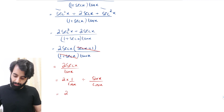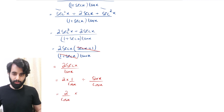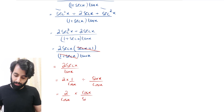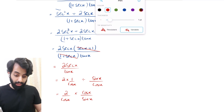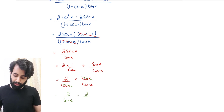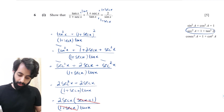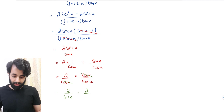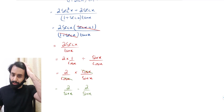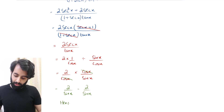This becomes 2/cos x divided by (sin x/cos x). Dividing by a fraction means multiplying by its reciprocal, so this turns into (2/cos x) times (cos x/sin x). The cos x terms cancel, leaving 2/sin x — exactly what the question asked us to show. So 2/sin x = 2/sin x, and we can write 'hence shown'.